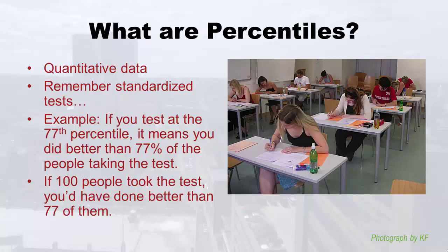Just to remind you: if somebody had come up to me in high school and said 'I got 77th percentile,' what I'd say is, okay, if only 100 people had taken the test, you'd have done better than 77 of them. I was always in like the 95th, 97th, or 98th percentile, and I realized it was because there were so many people in the pool — all public high schools in Minnesota, ninth grade. When you're taking nursing examinations, sometimes they'll put you on a percentile. That's what a percentile is: the percentage of people you did better than.